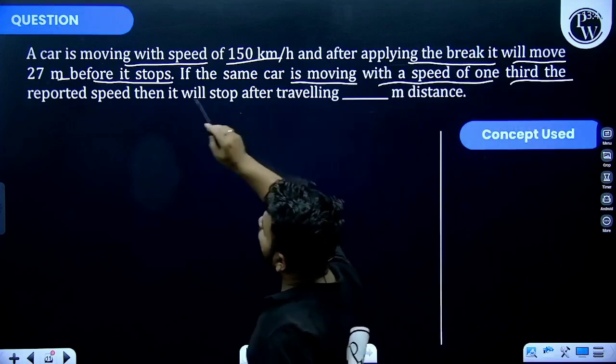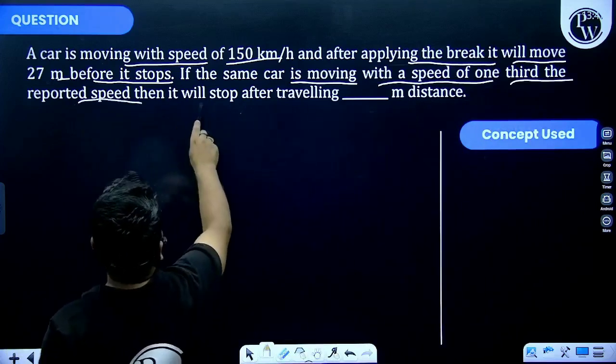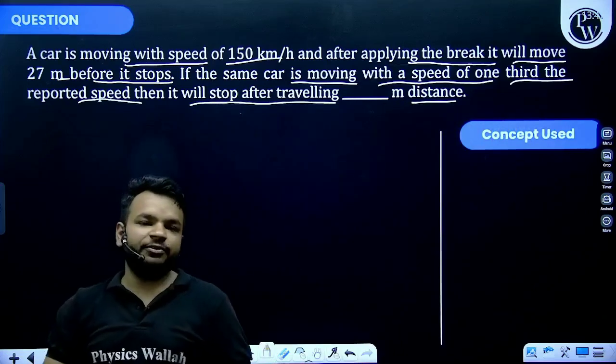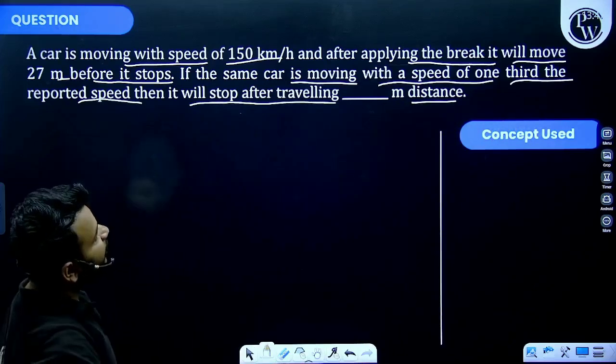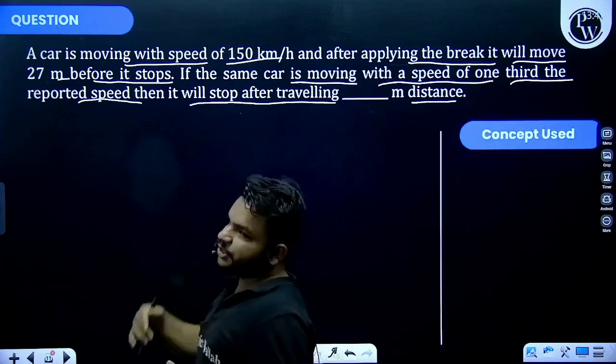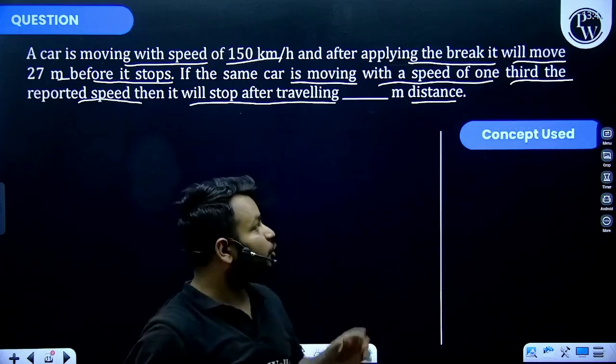So we have to calculate: if the velocity of car becomes one-third of the initial velocity, then how much distance is required for the stopping of the car. We know from the equation of motion that v² is equal to u² plus 2as.